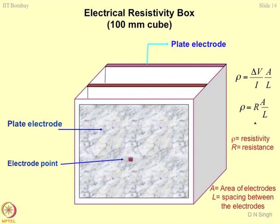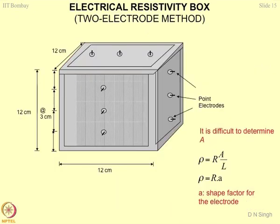This is the way studies on characterization of geomaterials were started. Later, the plate electrodes were changed to point electrodes because plate electrodes have their own associated problems. This was again a 12 cm cube embedded with point electrodes on all faces. We wanted to study material anisotropy due to compaction — measuring electrical resistivity in the x, y, and z planes to see what type of soil structure can be created just by compacting.